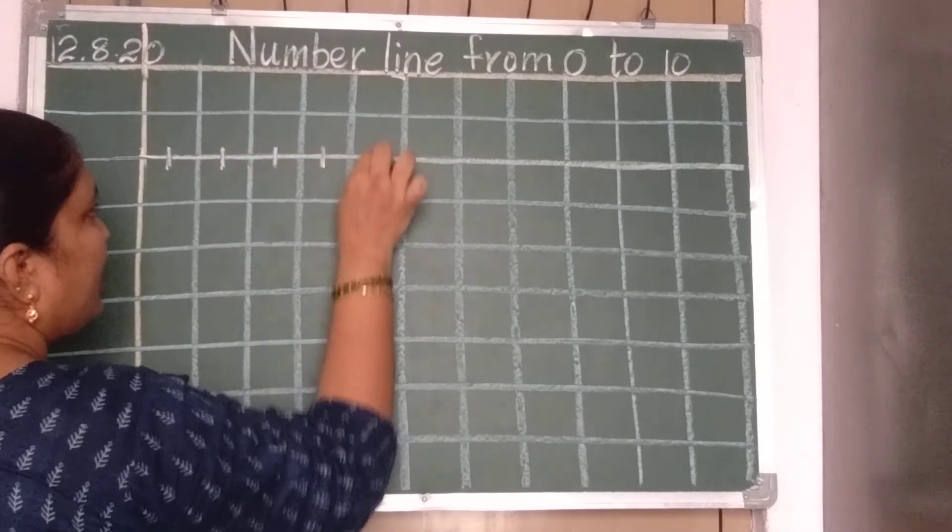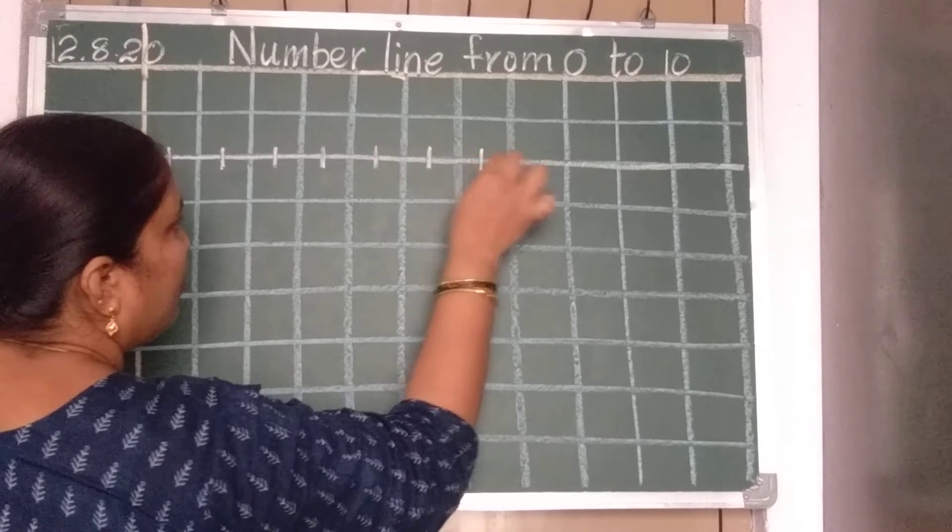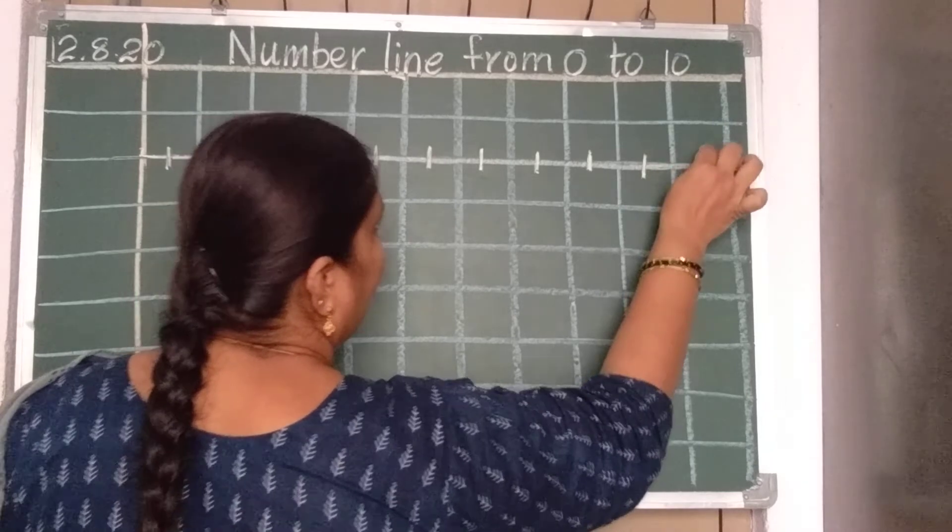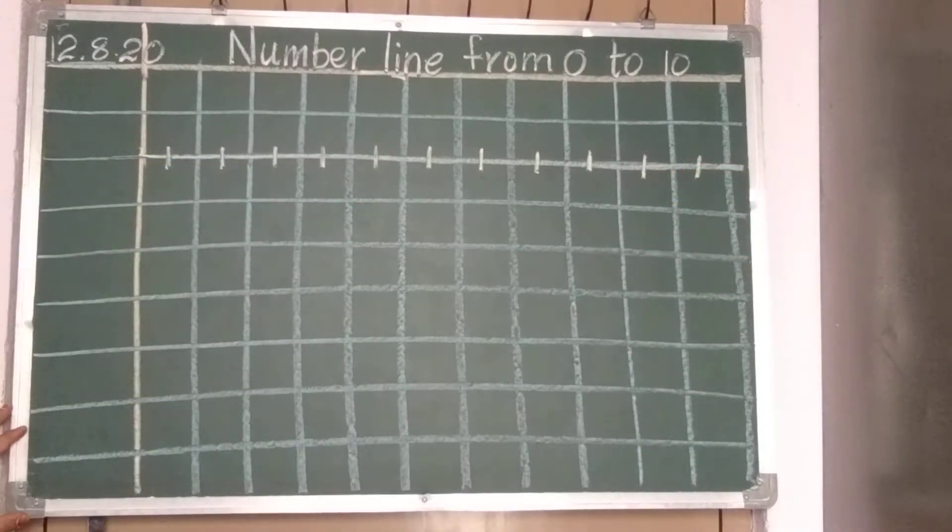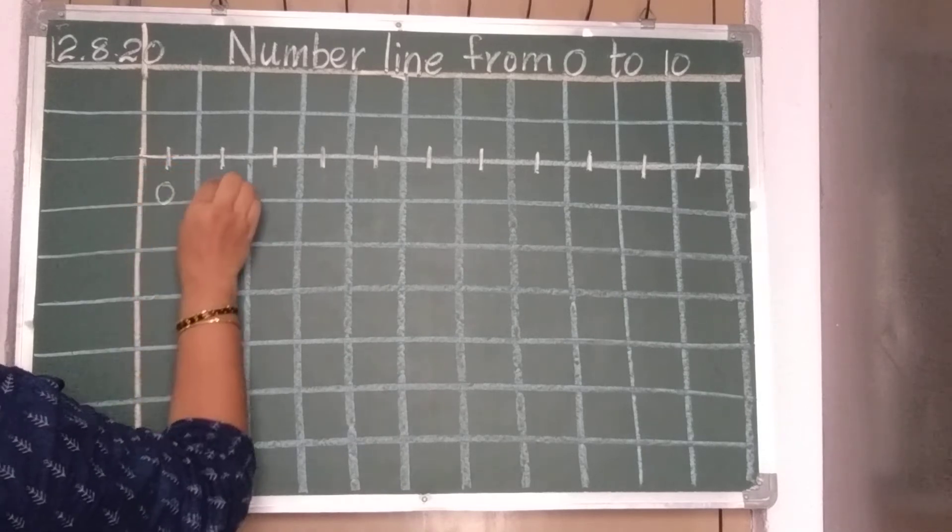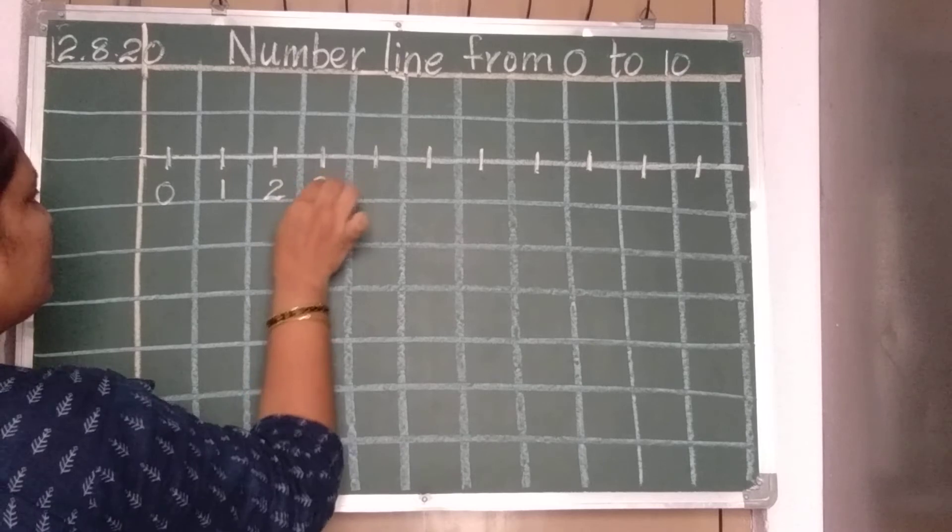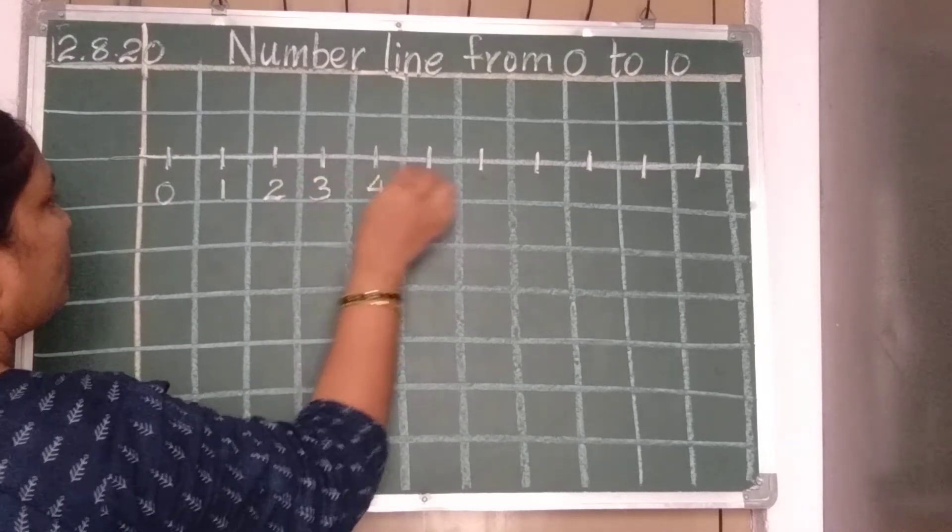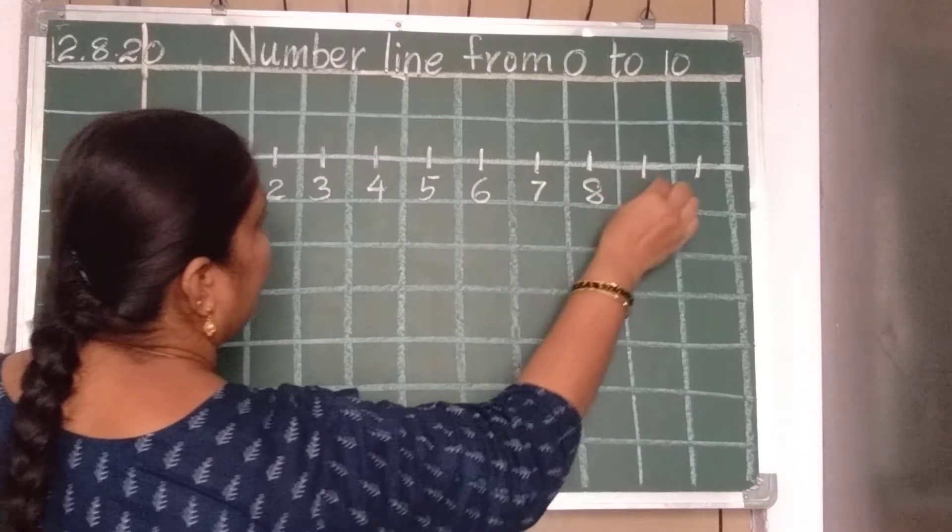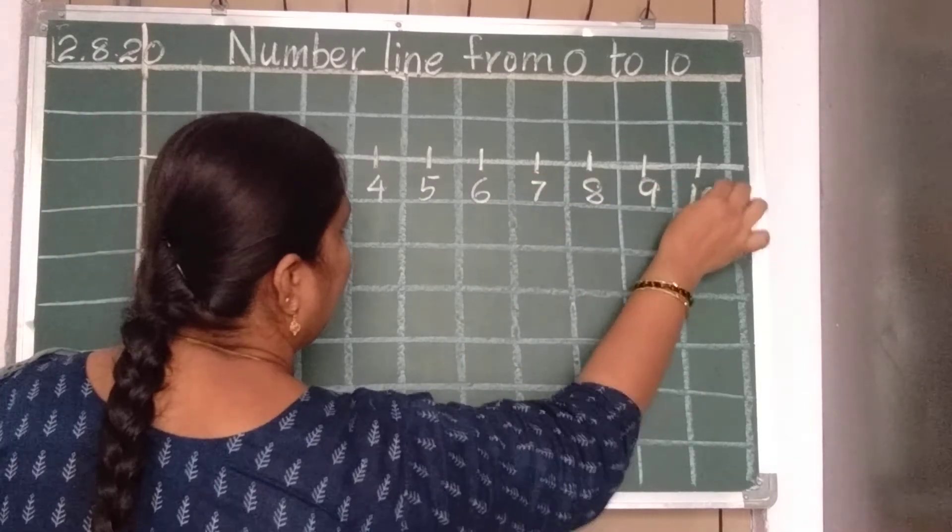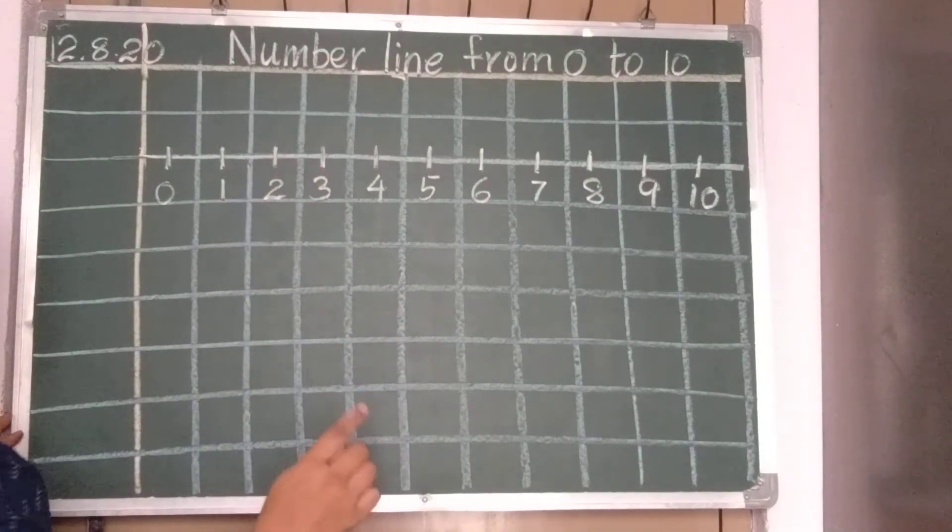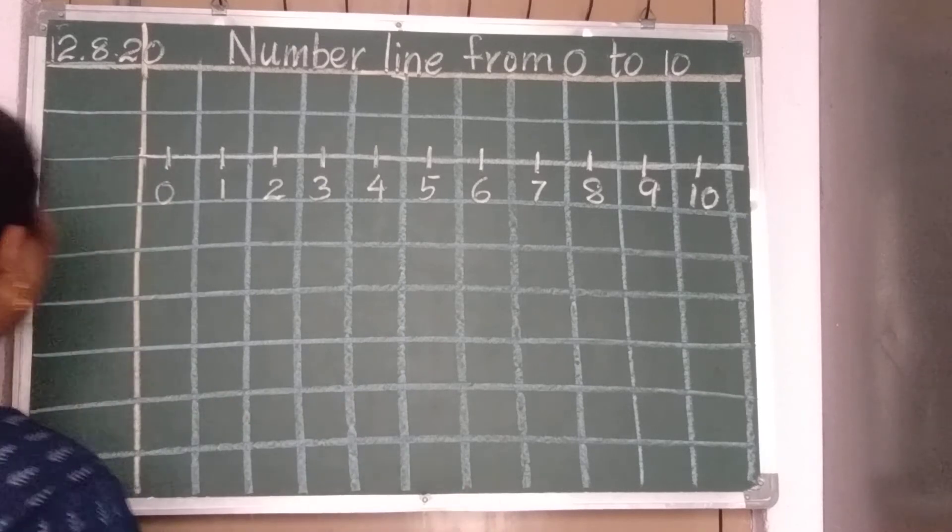And see children, this is a box. Between the box, one line, small small lines you should make. Between the box, small small boxes are there. In between the box, small small lines you should make. After that, write 0, 1, 2, 3, 4, 5, 6, 7, 8, 9, and 10. Okay, again you should repeat so that you can know how to draw.